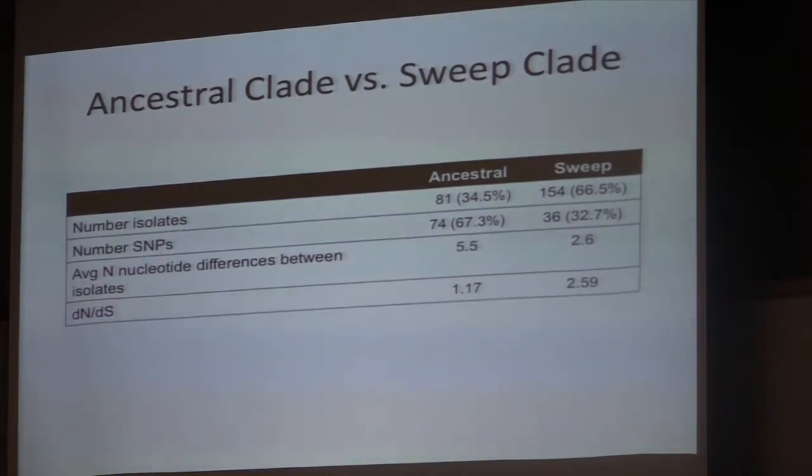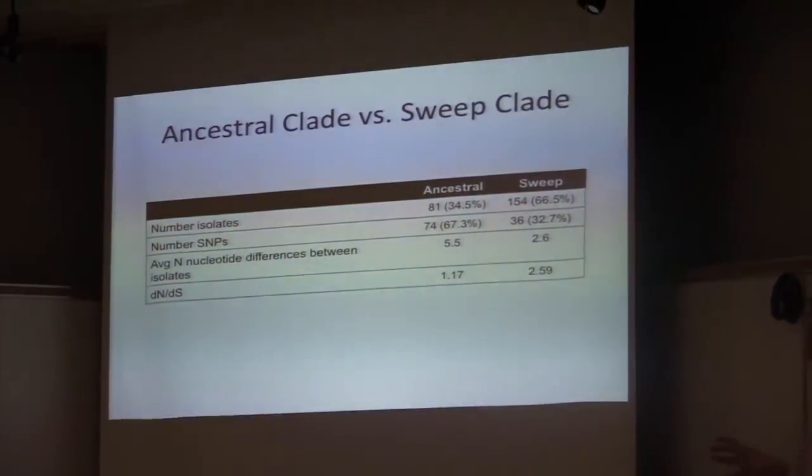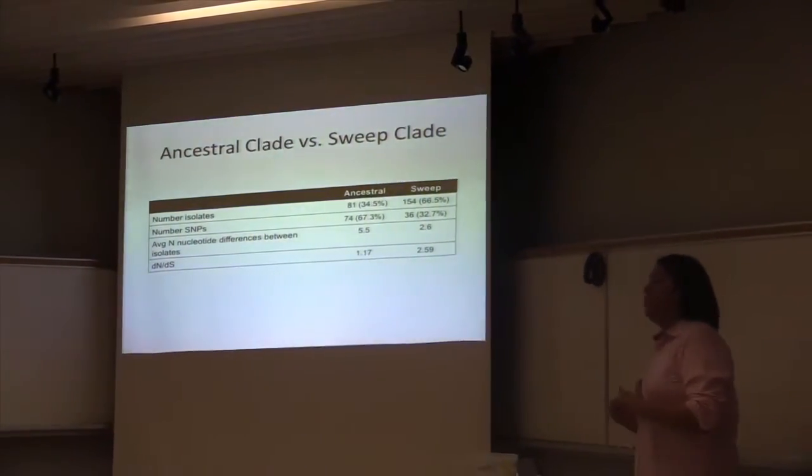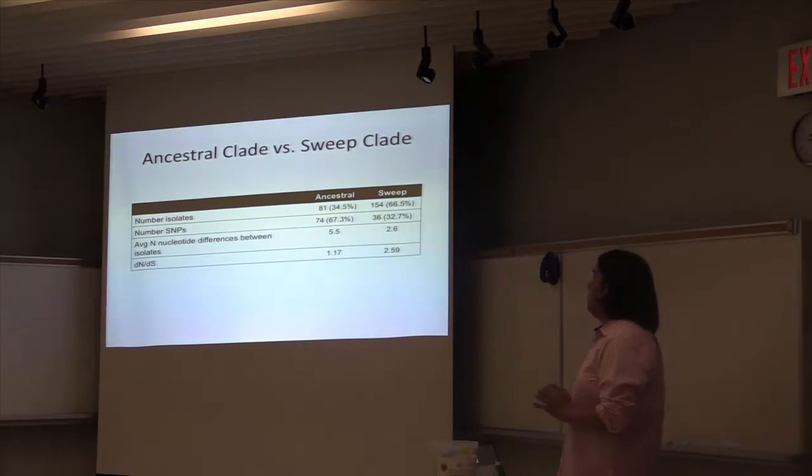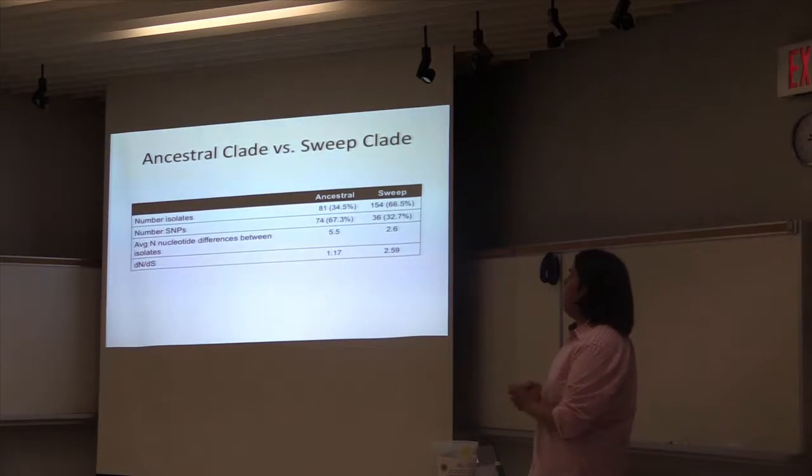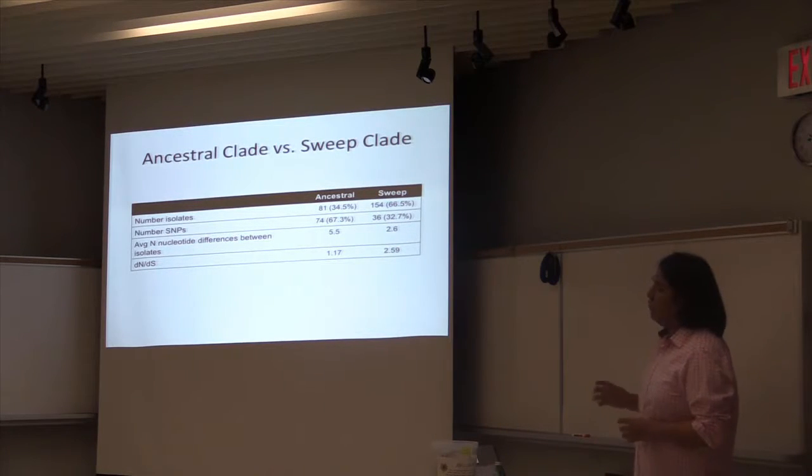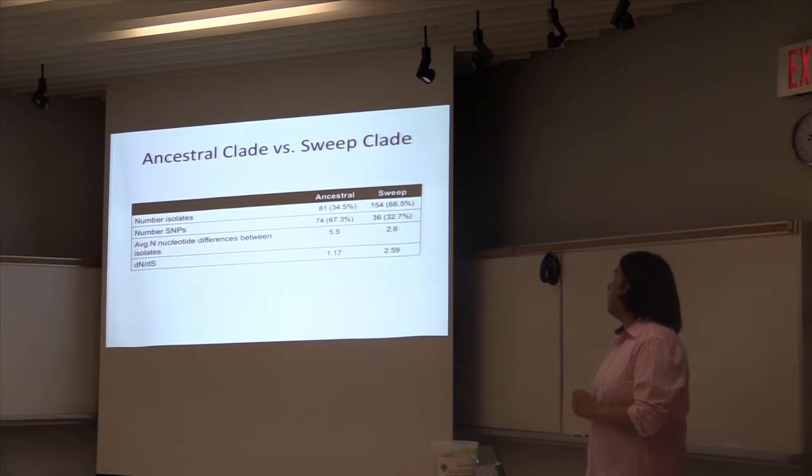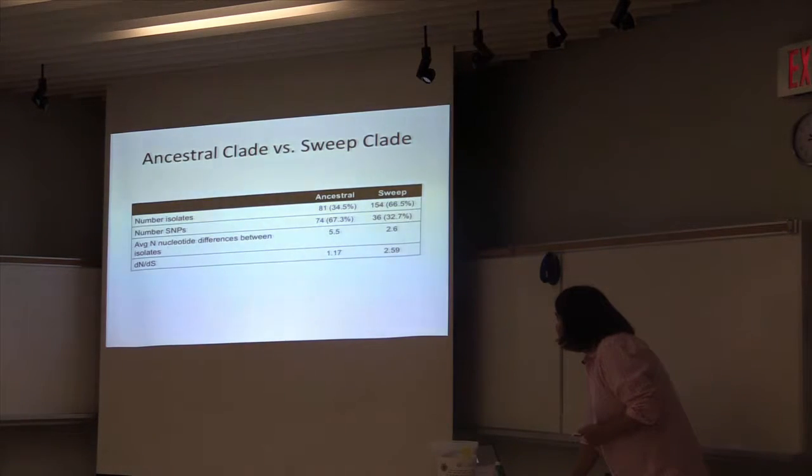Other signals for us calling one of these clades ancestral and sweep is that even though most of our isolates are in our sweep clade, most of the variation that we see in all our samples is observed in the ancestral clade. The number of SNPs in our ancestral clade is more than double that of the sweep population. When we look at the average number of nucleotide differences between isolates in the ancestral clade, it's double that of the sweep clade. Not only that, but when we compare the ratio of non-synonymous to synonymous mutations, we can see that the sweep population seems to have a signal for positive selection. Again, we're seeing a signal that the population is just coming from a selective bottleneck.